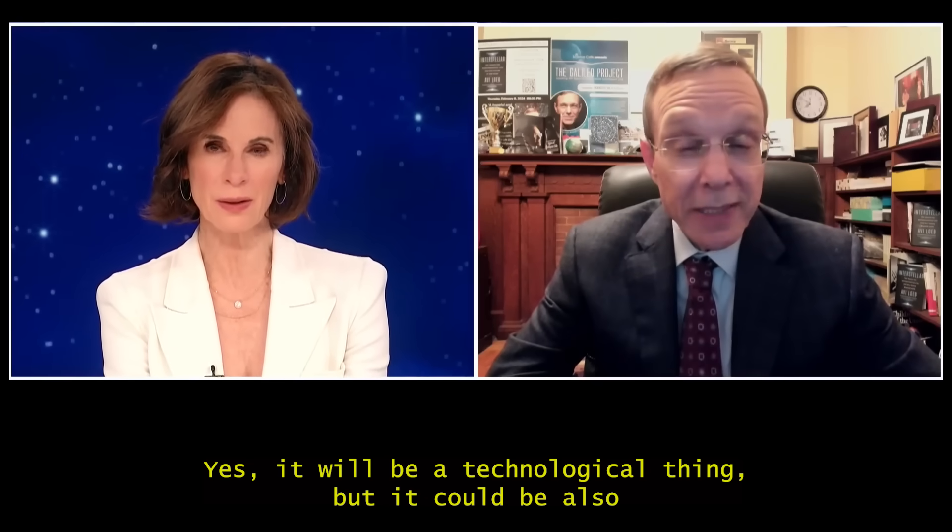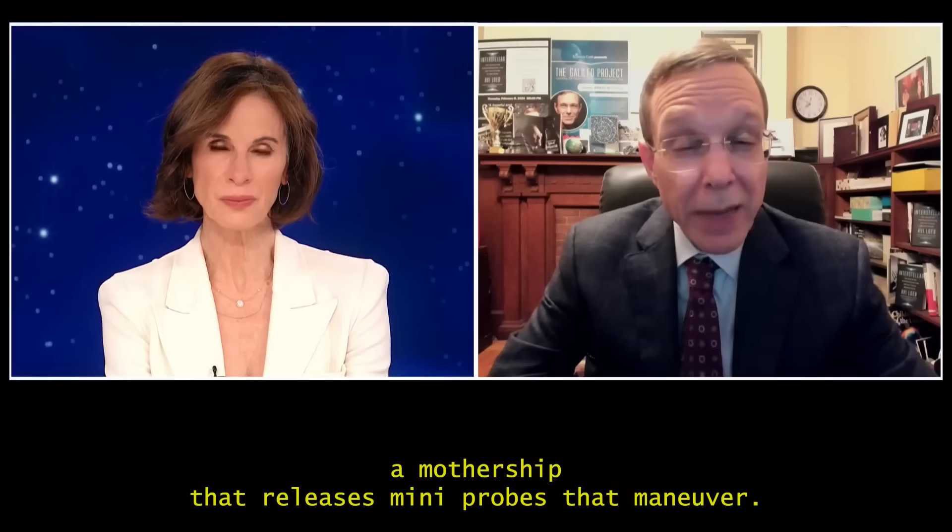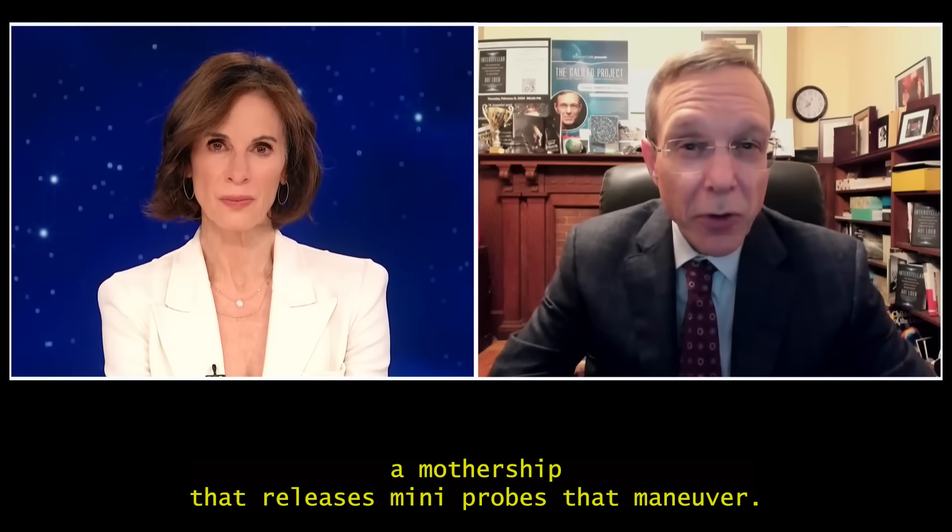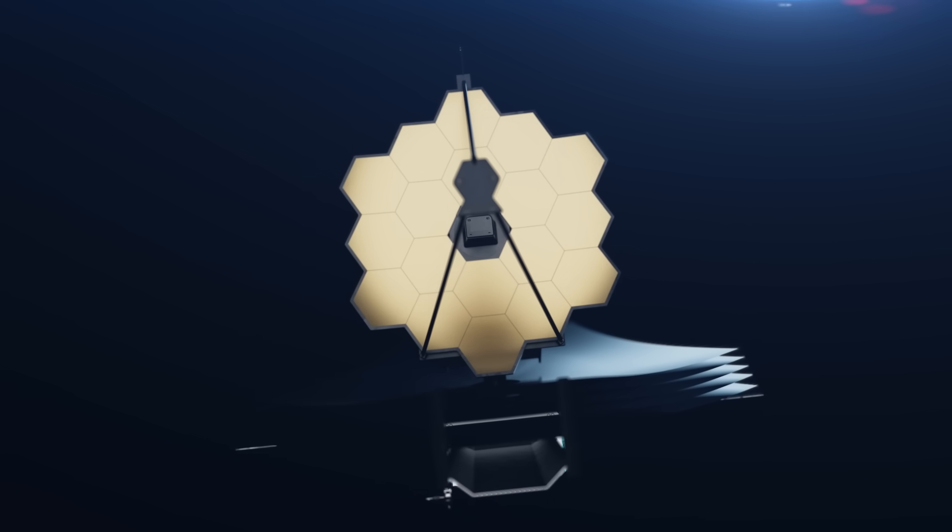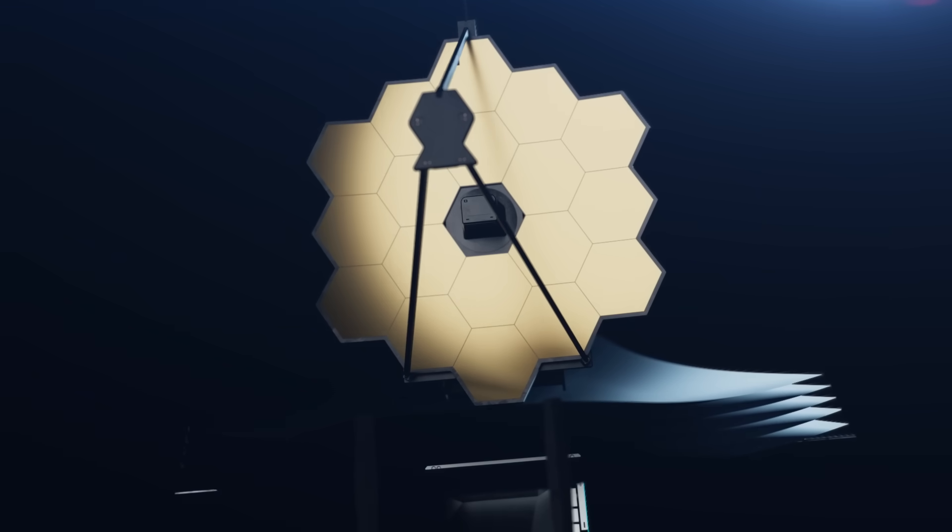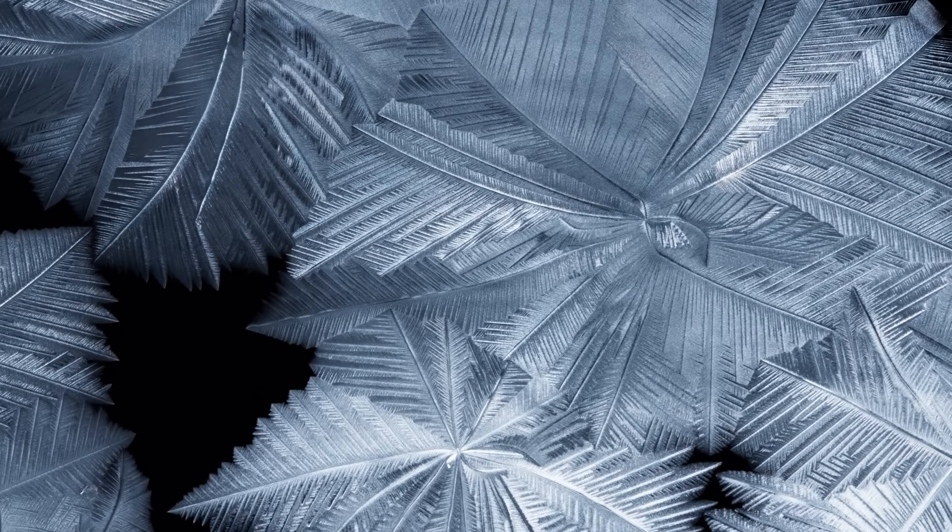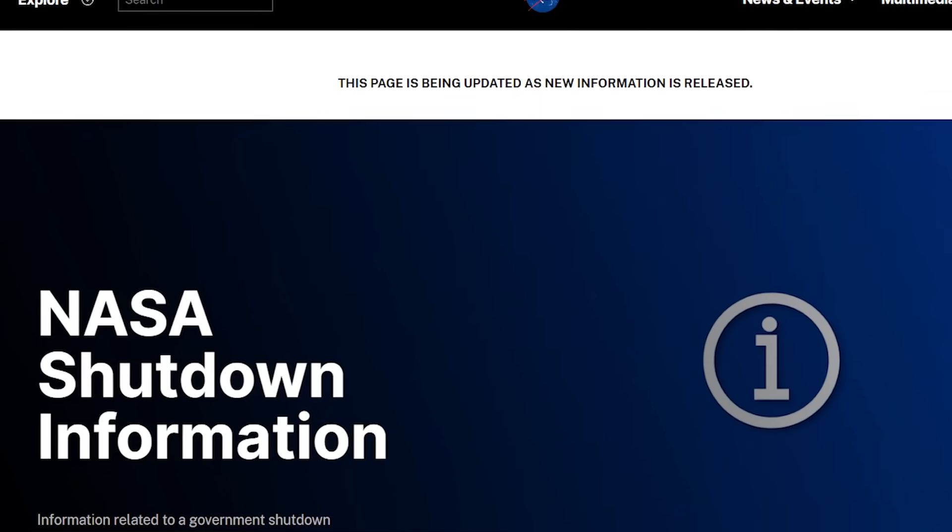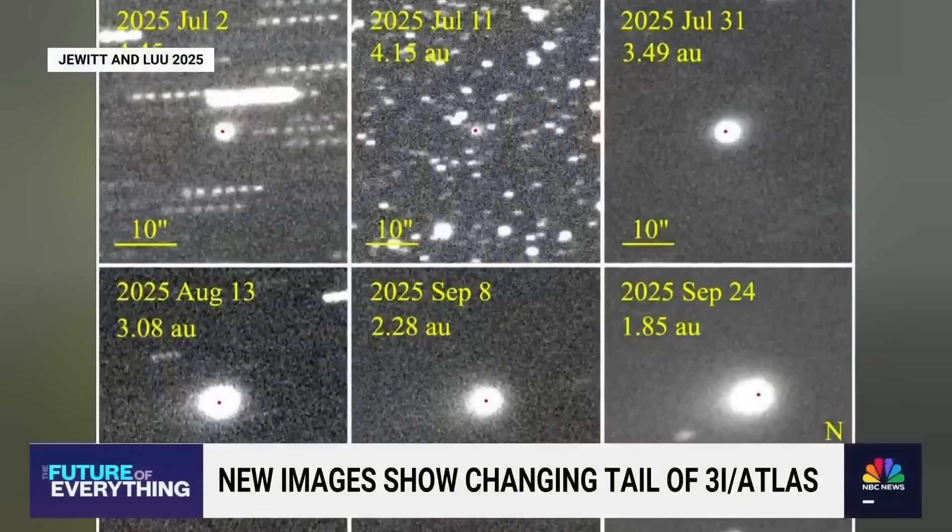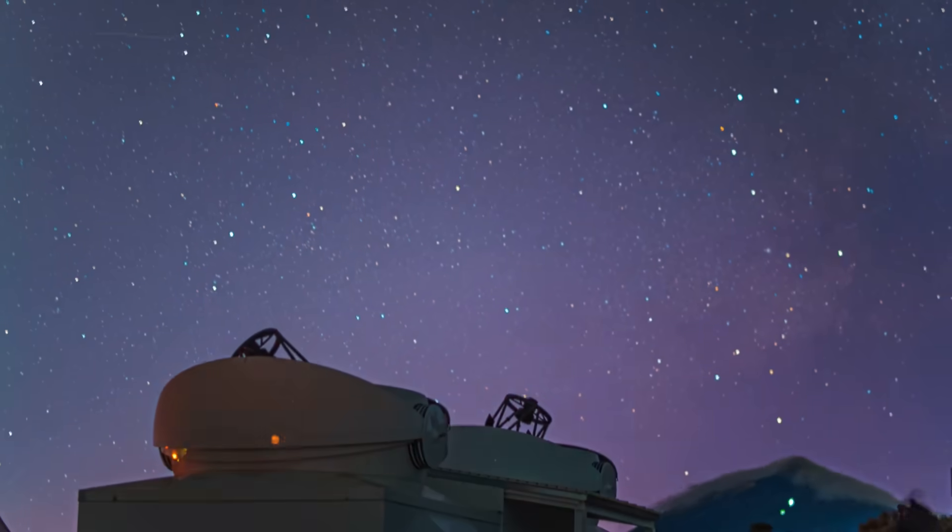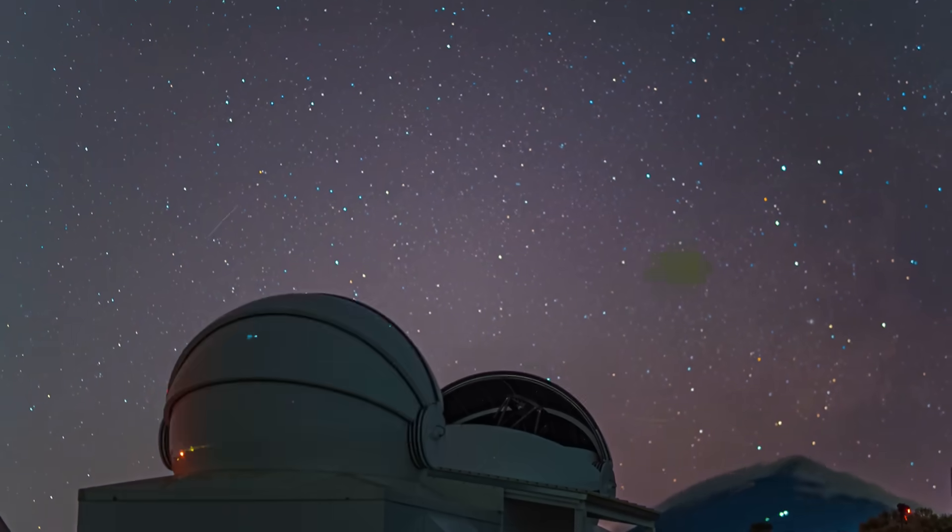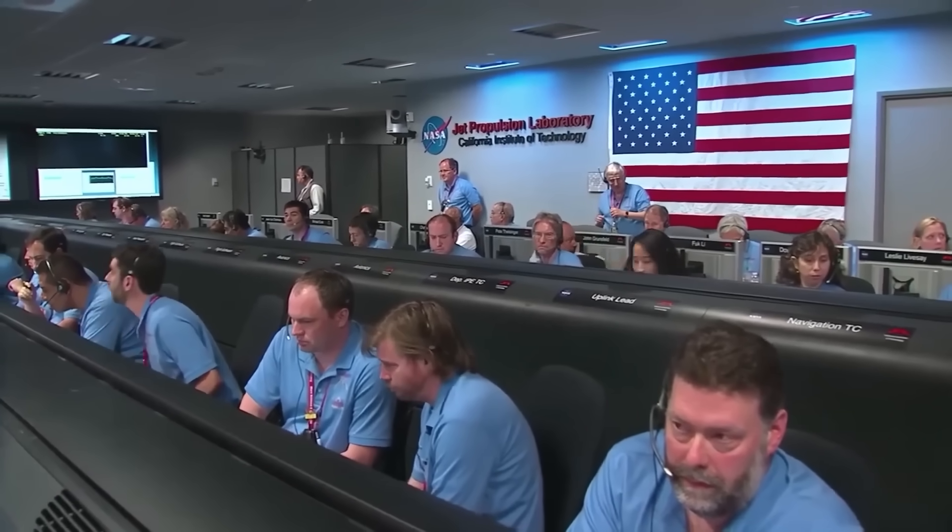Yes, it will be a technological signature, but it could be also a mothership that releases mini-probes that maneuver. For months, NASA tracked 3i Atlas. Webb analyzed its spectral signature before it entered the inner system. Then the updates froze. The stated reason? Government operations paused. Yet ESA continued transmitting. China's instruments kept recording. Private observatories never stopped. Only one agency's pipeline went quiet.